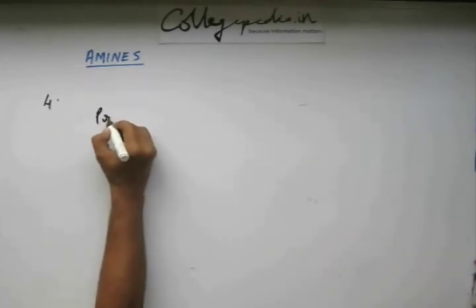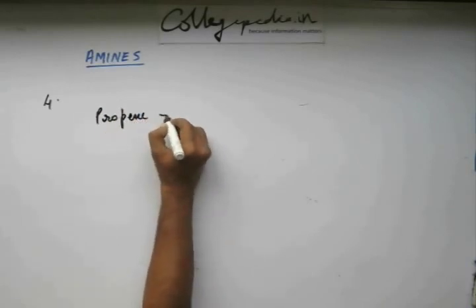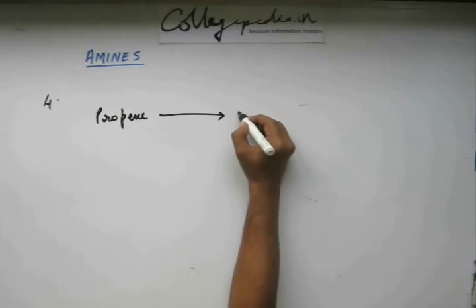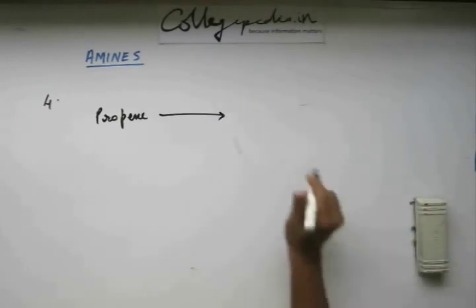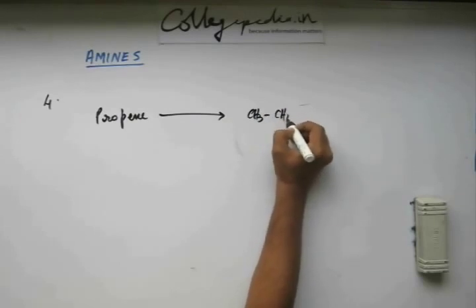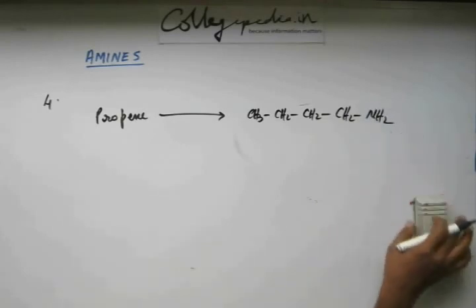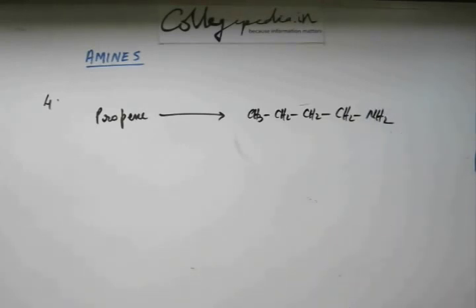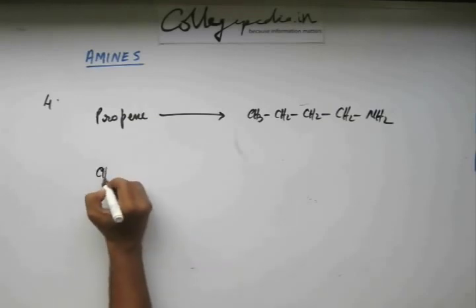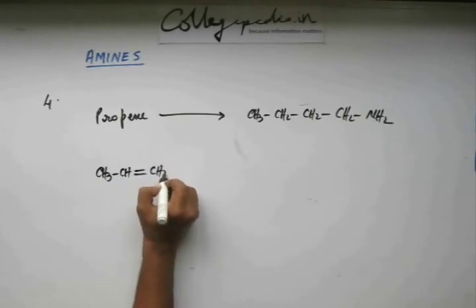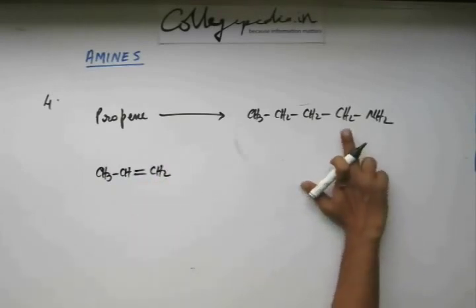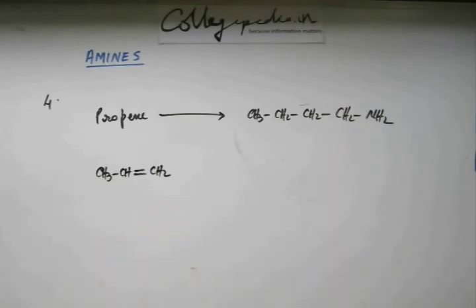Suppose you have propene and you convert this to butanamine. So quickly carry out the conversion from propene to butanamine. Simple reaction, simple conversion. This is propene, this is butanamine. Now I can see the carbon has been increased. So what reaction have you studied up till now to increase the number of carbons in the substrate?